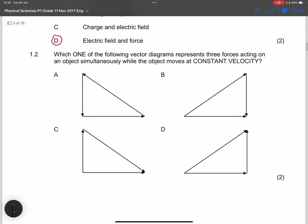Let's go to the next one. They say which one of the following vector diagrams represent three forces acting on an object simultaneously while the object moves at constant velocity. Ladies and gents, remember that constant velocity means that acceleration is zero, and that means that the forces must be at equilibrium. The net force is also equal to zero.